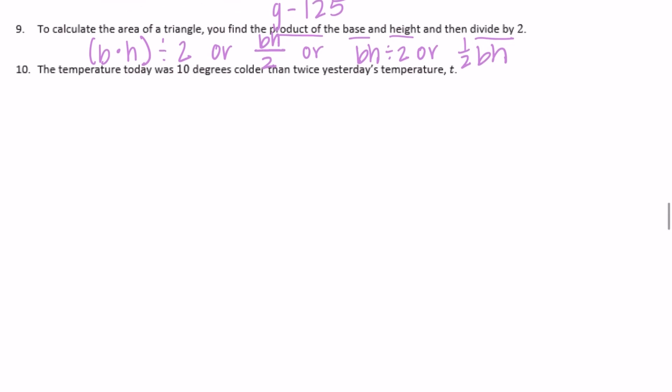Number ten: The temperature today was 10 degrees colder than twice yesterday's temperature. Colder means less than or subtracting. It's 10 degrees colder than twice yesterday, so two times yesterday's temperature: 2t, then minus 10: 2t - 10.